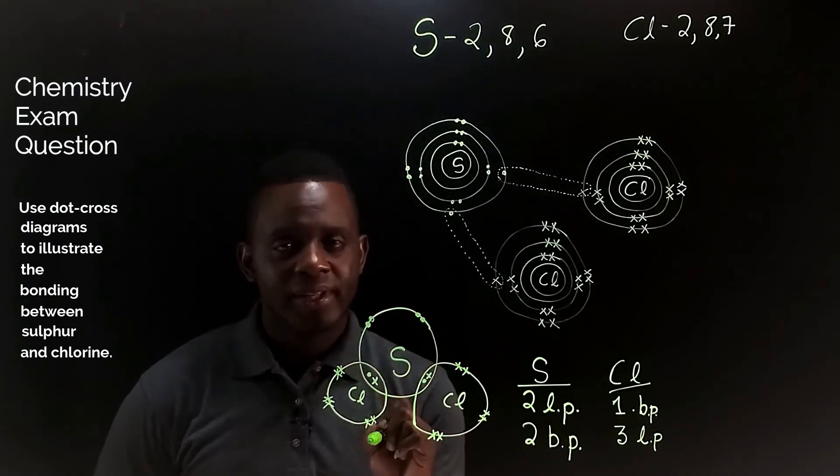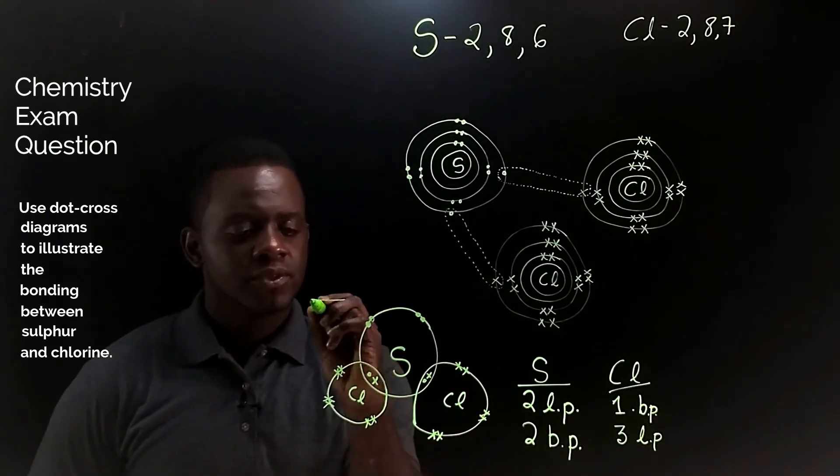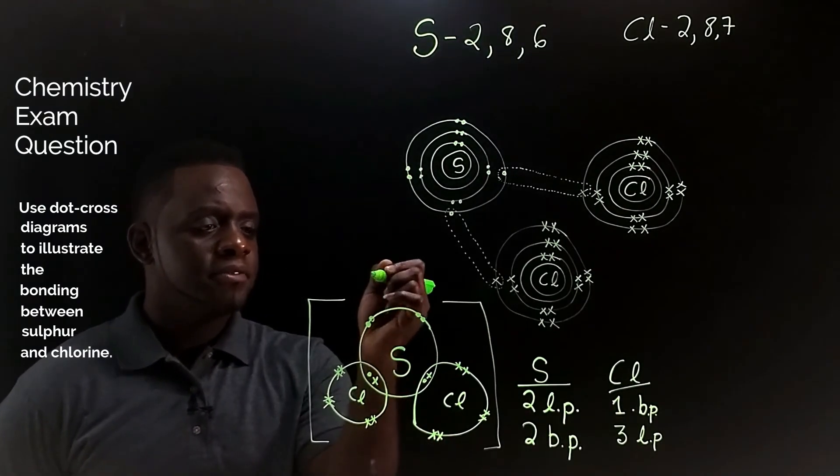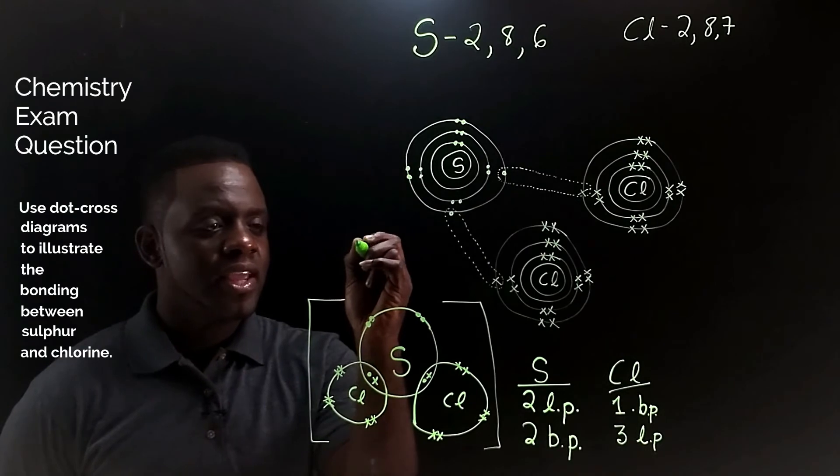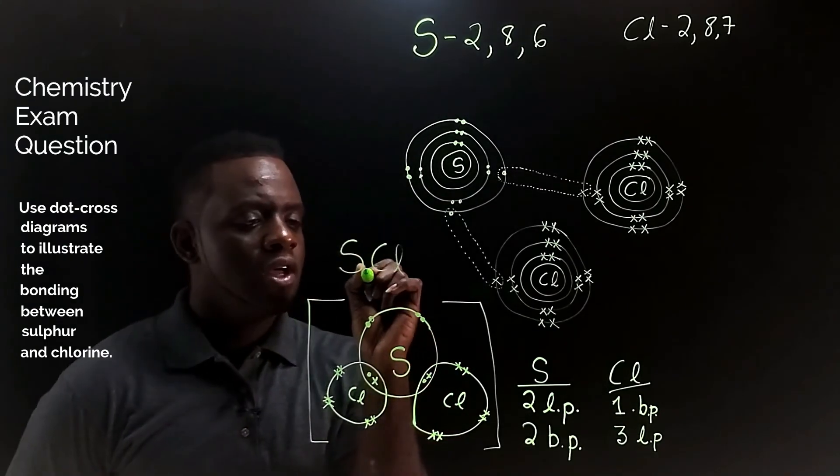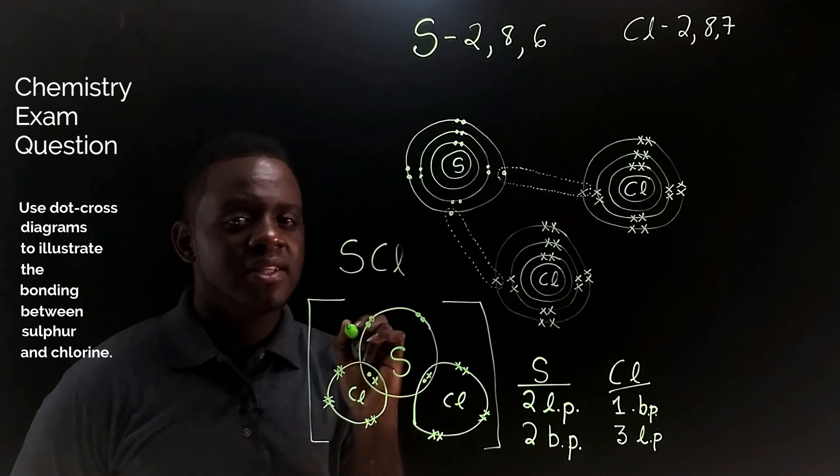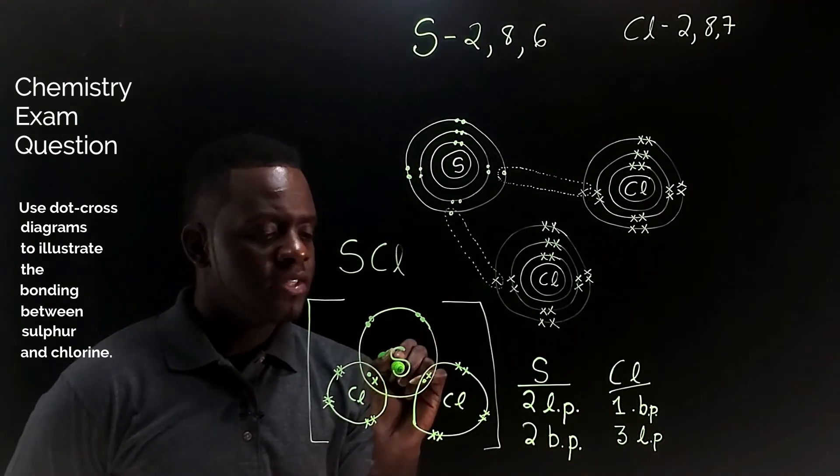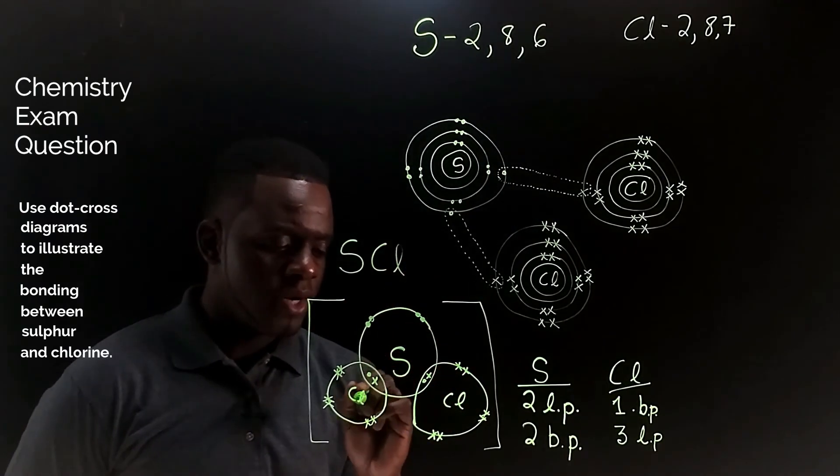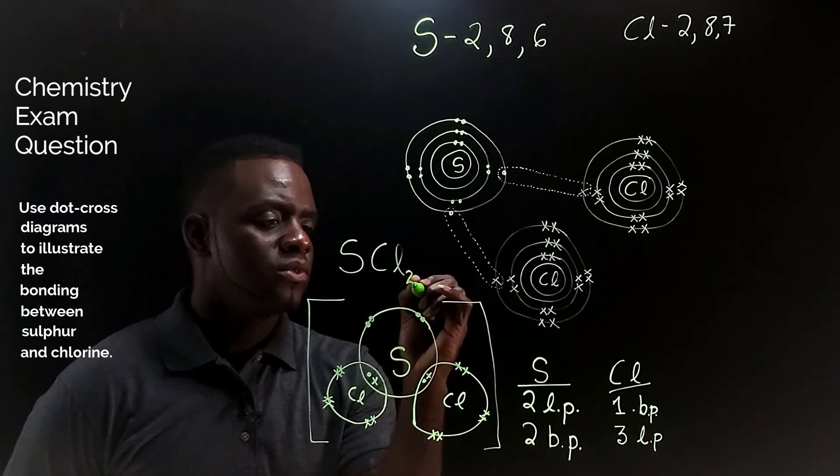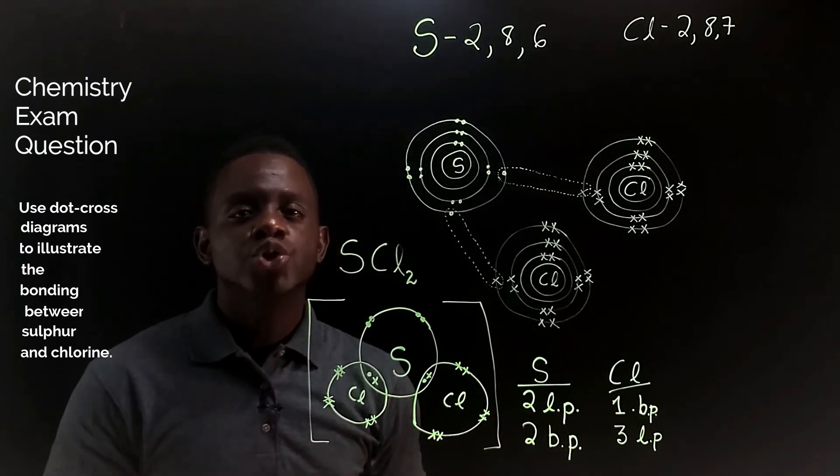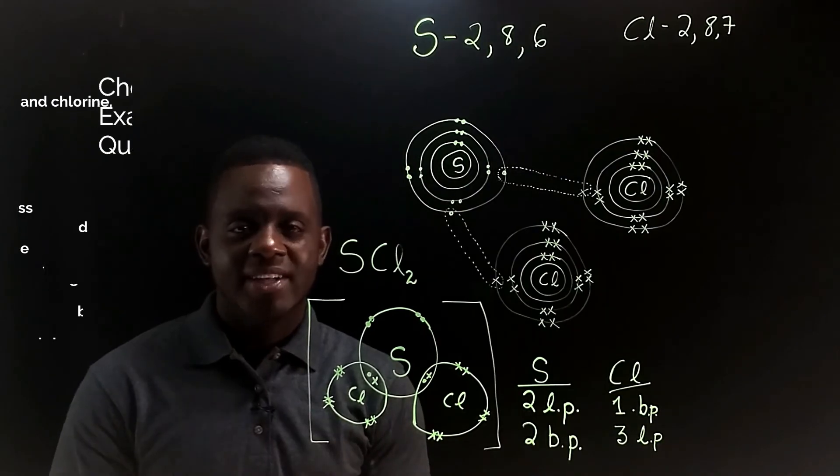Lastly, let's write the formula of this compound. Let's put some square brackets around it. We first write each element in the compound, S and Cl. And in the subscript position we place the number of each element in the compound. We have one sulfur. We do not write one in formulas. And for the chlorine, we have two. And that completes all the diagrams and details we need to show the bonding between sulfur and chlorine.